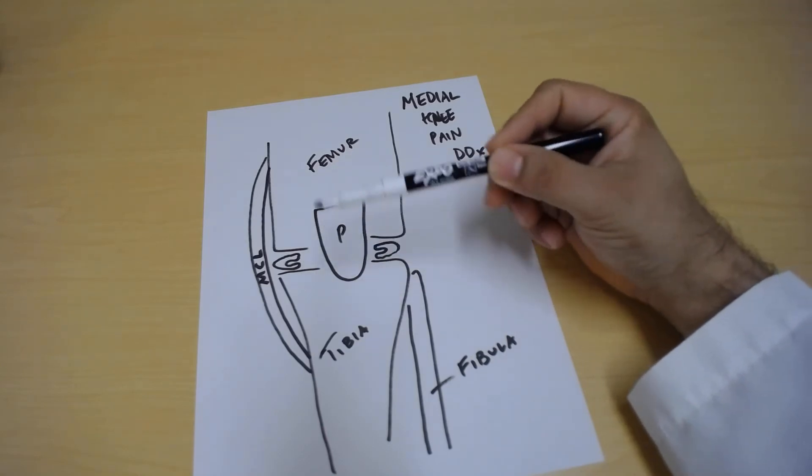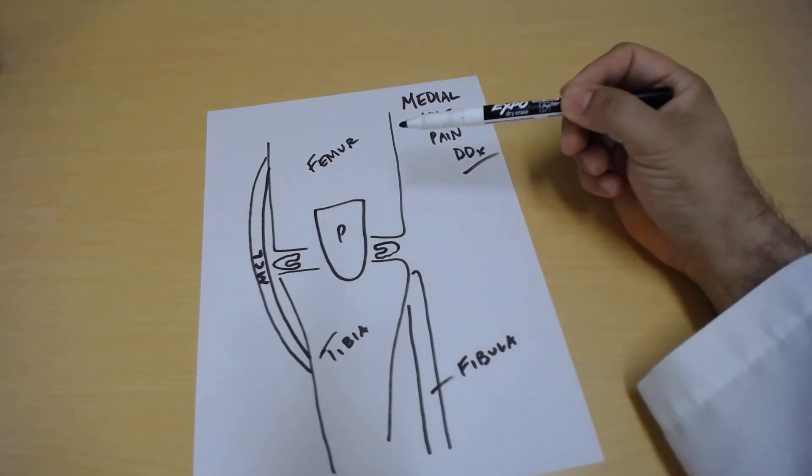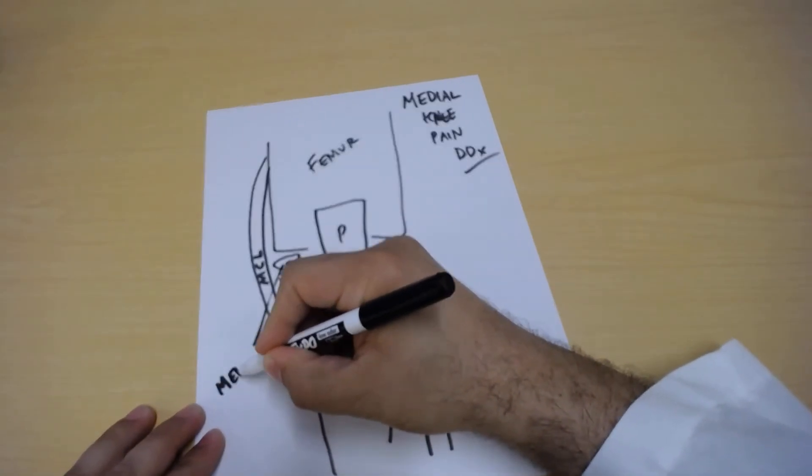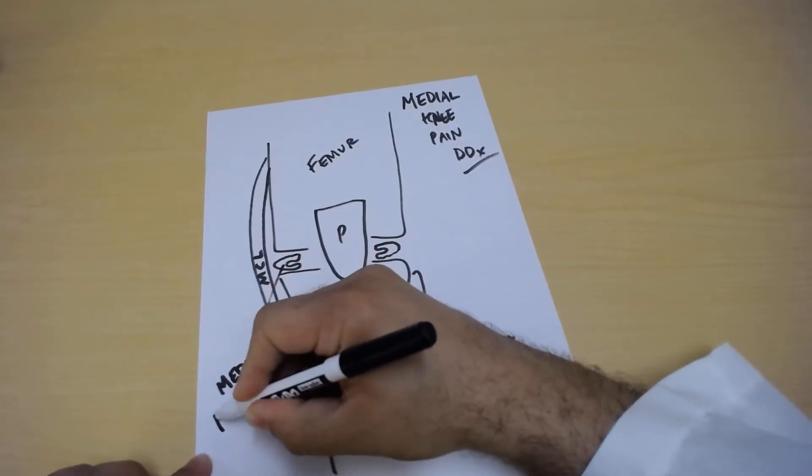If you injured the meniscus, usually you will get some swelling inside the joint. So that's one of the help differentiating things. So this is known as the medial meniscus.